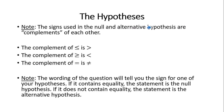The signs used in the null and alternative hypothesis must be complements of each other. For instance, if you use less than or equal to in the null hypothesis, you must use greater than in the alternative. If you use greater than or equal to in the null, you use less than in the alternative. If you use equal to in the null, you use not equal to in the alternative, and vice versa. The wording of the question will always tell you one of these signs — if it contains equality, the statement goes with the null hypothesis; if it does not contain equality, it goes with the alternative hypothesis.